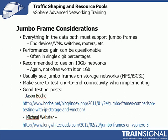Some considerations: everything in the data path must support jumbo frames — devices, VMs, switches, routers, everything. If you set up your vSphere host and VM guests for jumbo frames but the connected switch does not support them, you'll see frames dropped and it just won't work — it has to be end-to-end. Performance gains can be questionable, often in single digits. There are references to testing by Jason and Michael. What you'll find in most cases is it's usually not worth doing jumbo frames on 1 gig connections. A 5% gain on 1 gig is not a lot of speed, but a 5% gain on a 10 gig network is much more significant.